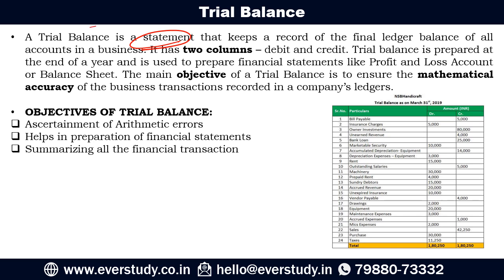Basically, in the accounting process, we first record our transactions in the journal, and then we post those transactions to the ledgers. Every ledger account creates some balances, some balances are carried forward — those balances are either debit or credit. All the balances of every account are then summarized in the trial balance, and that is the main importance of creating a trial balance.